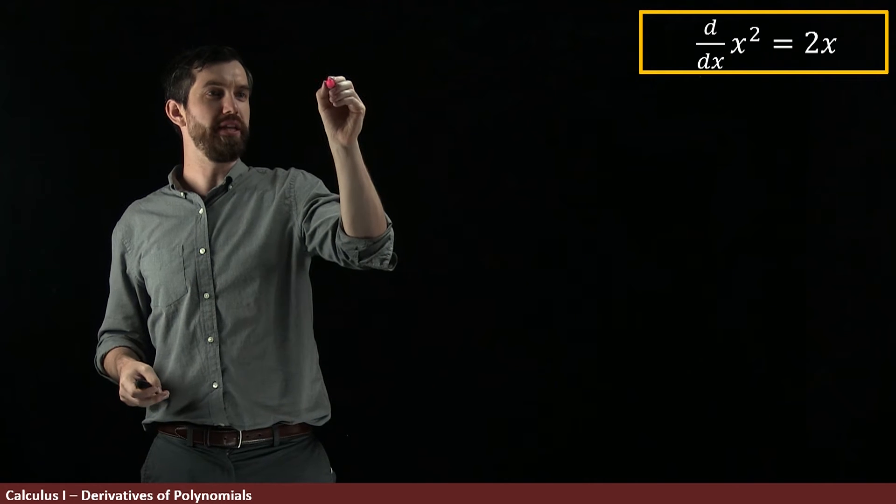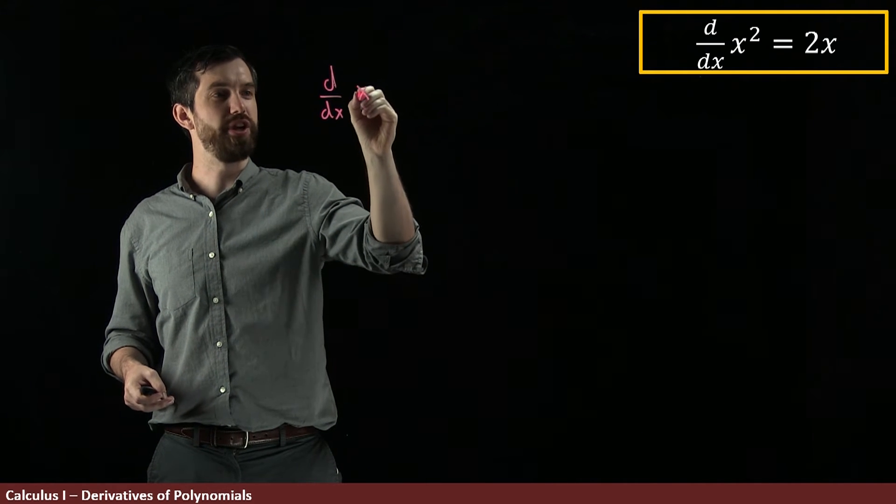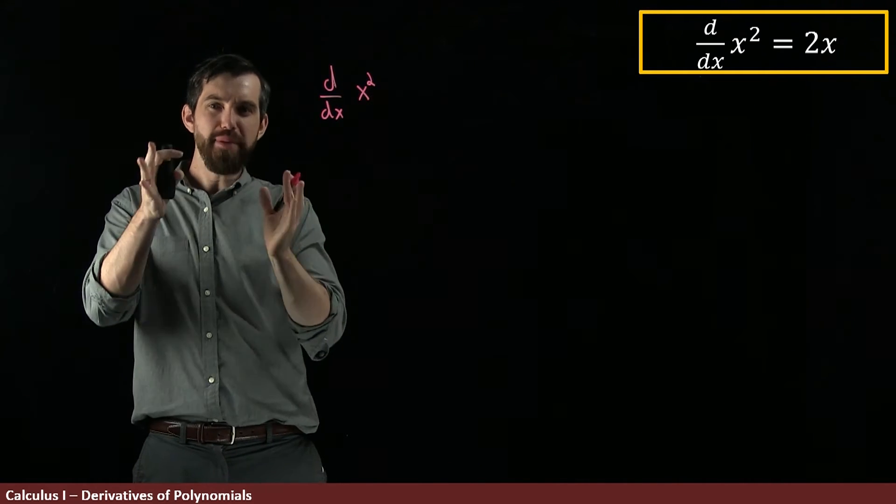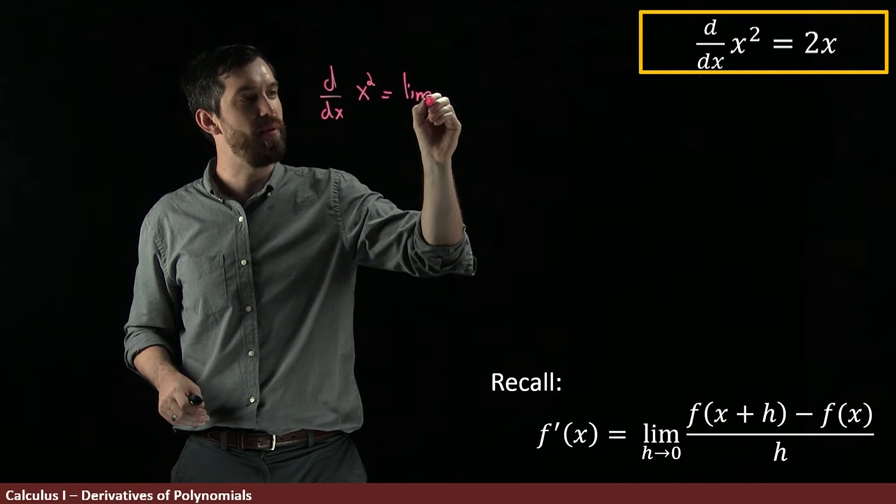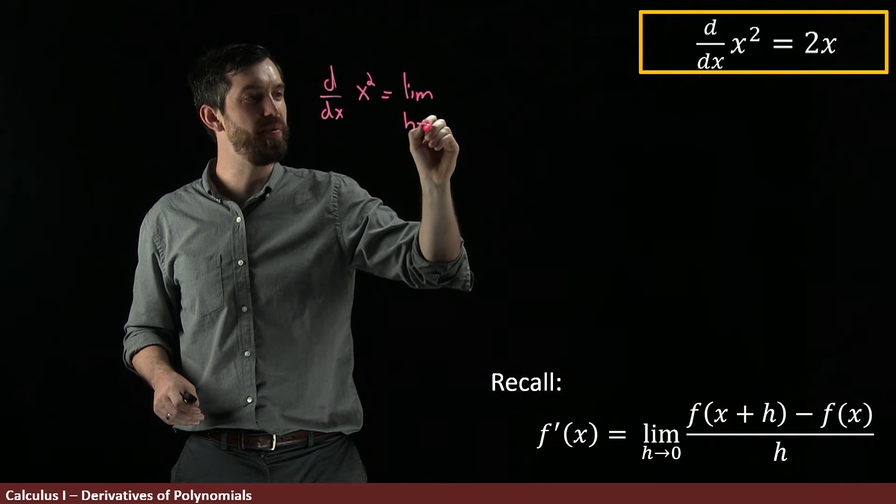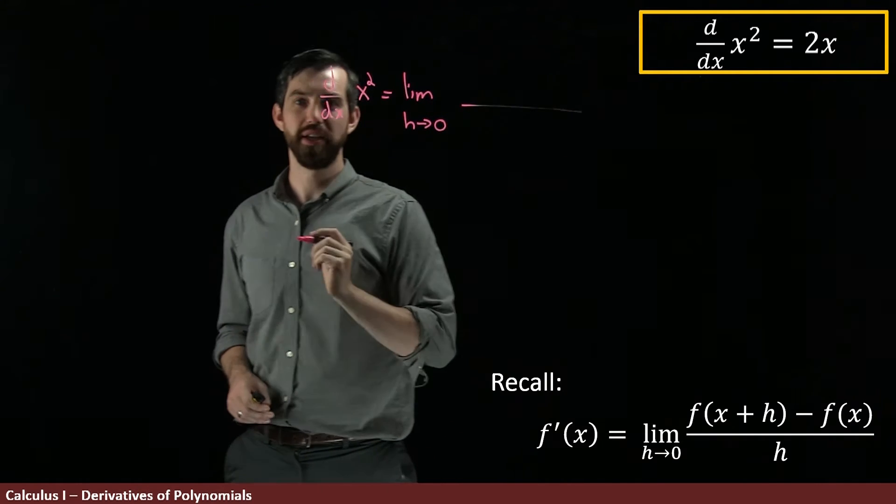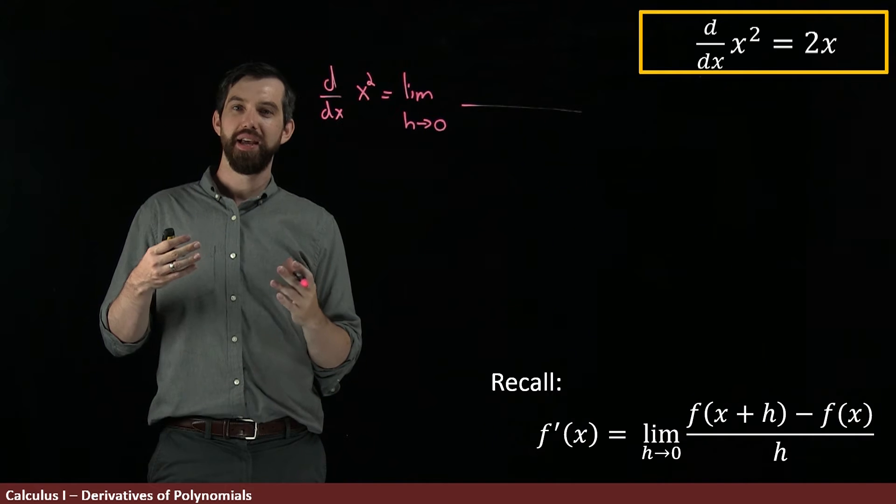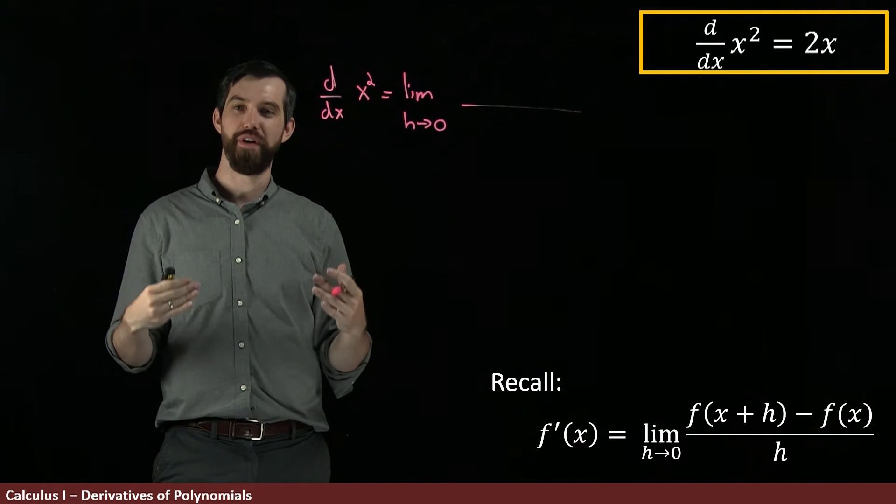So our goal is the derivative with respect to x of x². I'm using the formal definition of the derivative, which is a limit as h goes to zero, and then what I put here is the quotient: f(x+h) - f(x) all divided by h.